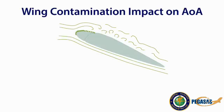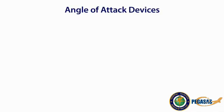Wing contamination of any type will affect the parasitic drag of the wing. This impact is felt by having to fly a specific airspeed at a higher angle of attack to produce the same amount of lift. The contamination will also cause the airflow to separate earlier than a clean wing, causing higher drag at any angle of attack. Calibration of angle of attack displays could be affected by wing contamination, and information presented may be unreliable if the wing is contaminated.